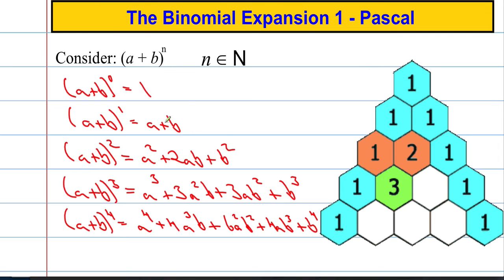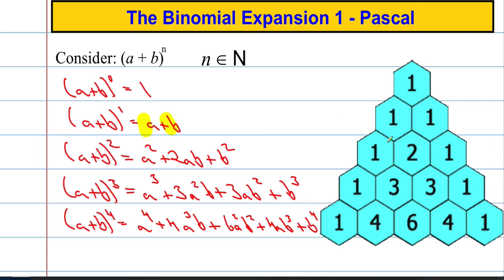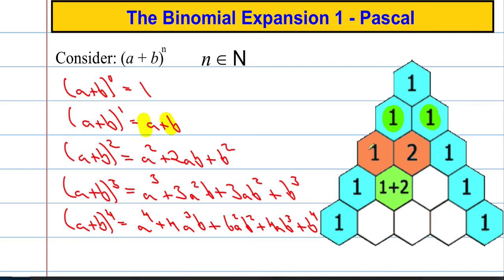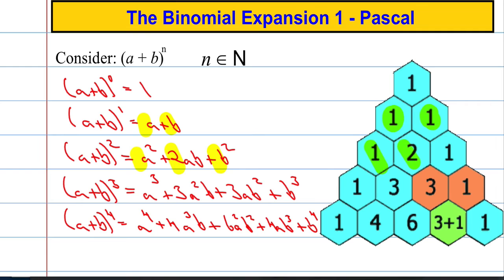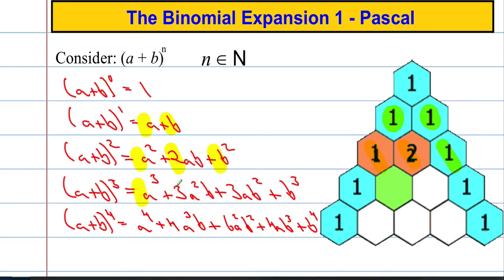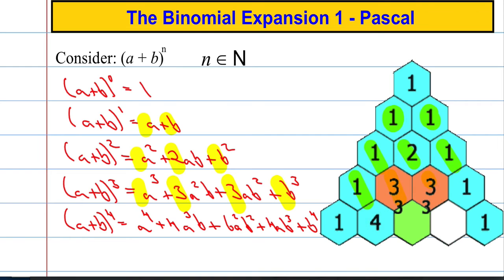You may have spotted that the coefficients, or the numbers in front of a and b, here are one and one. And that seems to relate to Pascal's triangle. Here we've got a coefficient of one, coefficient of two, coefficient of one — one, two, one. Here we have a coefficient of one, then three, then three, then one — and there again: one, three, three, and one.